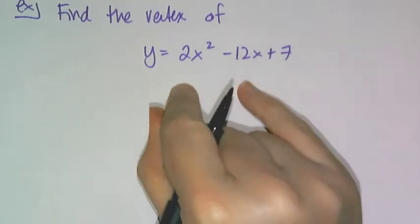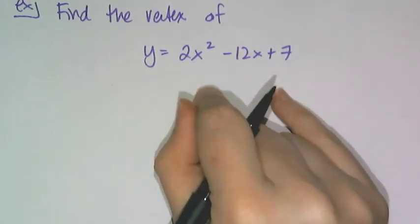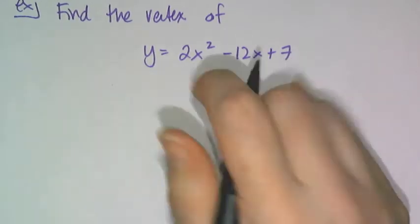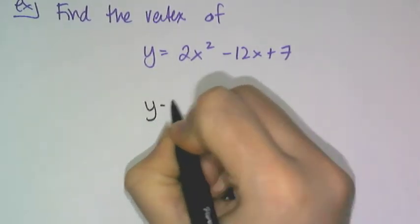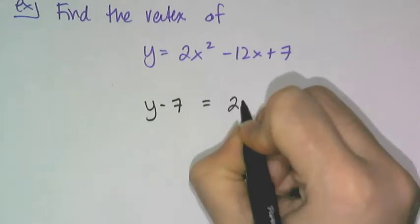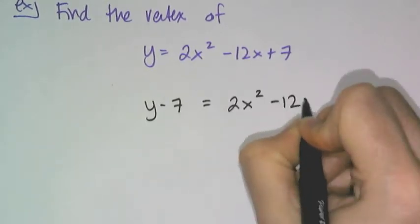You still have to get the x squared with the x's by itself and move everything else away. So this plus 7 becomes y minus 7 equals 2x squared minus 12x.